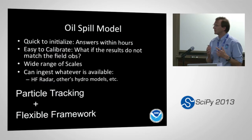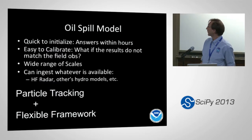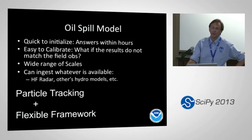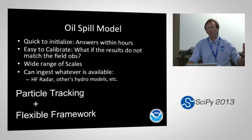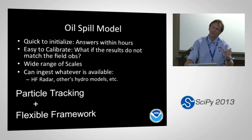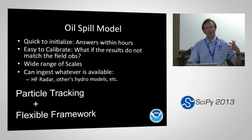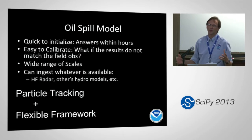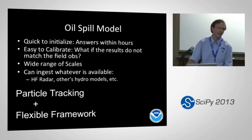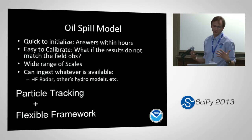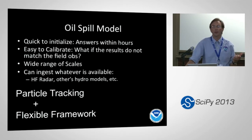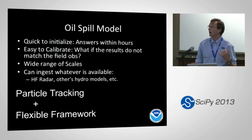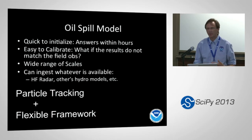An oil spill model has to be very quick to initialize — we've got to get answers within hours — and it also has to run quick and be very easy to calibrate. We cover a really wide range of scales, from a couple thousand gallon spill in a small bay to the Deepwater Horizon, looking at the entire Gulf of Mexico or whether it'll go out to the Gulf Stream and hit the North Atlantic. We need to make use of whatever data or model results are out there — HF radar, unstructured grids, structured grids, whatever.